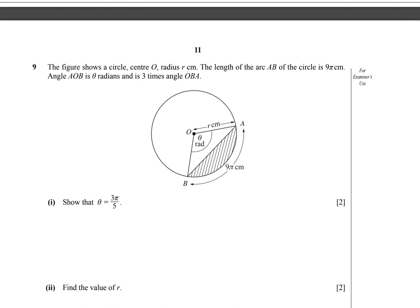Let's draw something inside the circle. In triangle AOB, angle OBA and angle OAB are both equal and their value is one third of θ according to the question. They are equal because triangle AOB is an isosceles triangle. So we can write: angle OBA equals angle OAB equals one third of θ. In a triangle, the total interior angle sum is π radians.